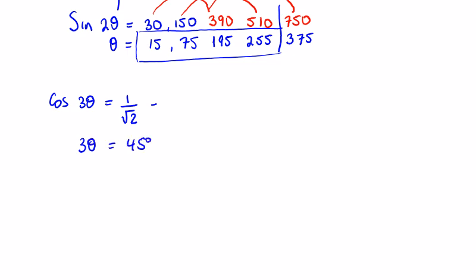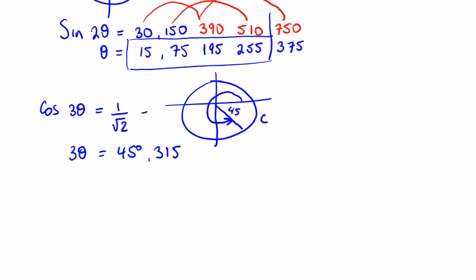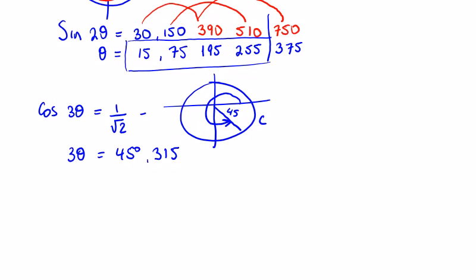What other angle? Let's look at the unit circle where cos is positive. It's positive in here. So what angle is this all the way around? We're going to take 45 from 360 to get 315. How many more solutions will I have? Well, let's get theta first and then see. So if 3 theta is 45 and 315, theta is 15 degrees and 105.